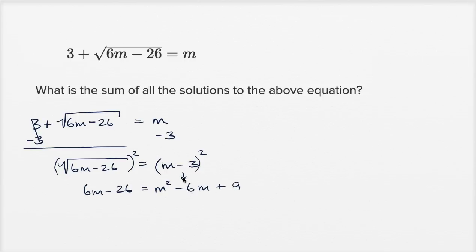And if this step you found a little confusing, I encourage you on Khan Academy to review multiplying expressions. m minus three times m minus three is the same thing as m minus three squared. You'll have m times m, which is m squared, m times negative three, which is negative 3m, negative three times m, which is negative 3m, and then negative three times negative three, which is positive nine. And the negative 3m plus the negative 3m, that is negative 6m.